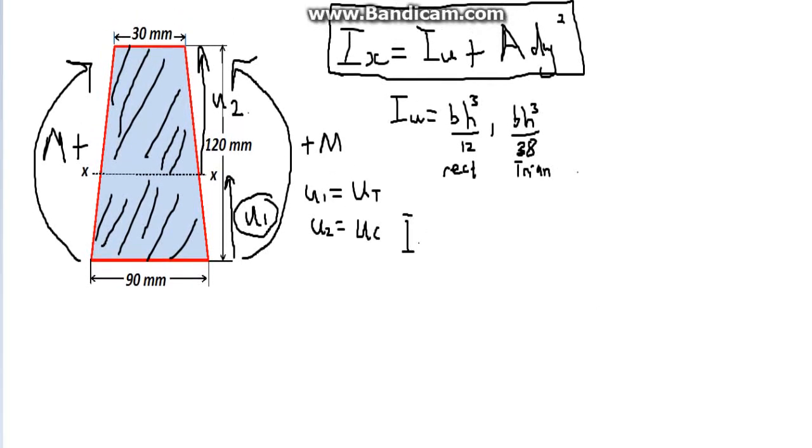Remember, this is for the triangle. Base times height cubed, divided by 36, plus the area, base times height, obviously, multiplied by dy squared, divided by 2. Divided by 2 because area of a triangle, base times height, divided by 2.